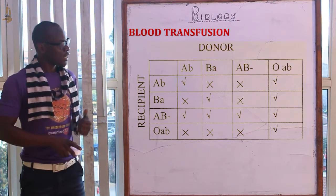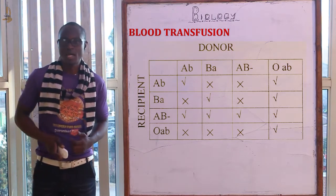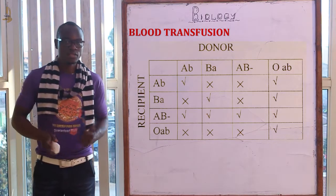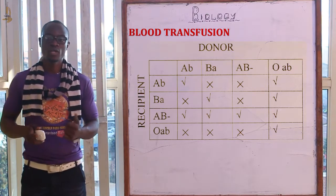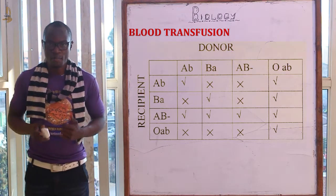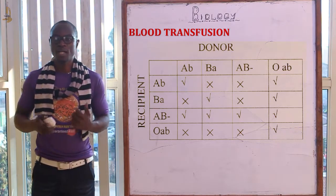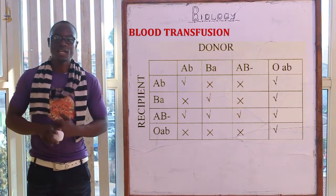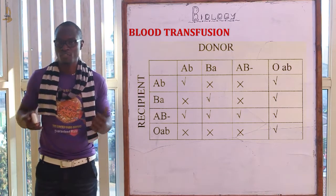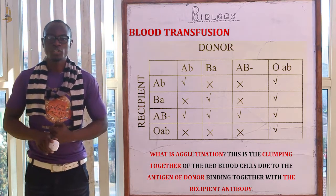As seen in the diagram of blood transfusion, blood group AB has neither small a nor small b antibodies. For this reason, it is referred to as the universal recipient, meaning it can receive blood from all other blood groups — blood group A, B, or O — since it does not have any antibodies. Antibodies can cause the clamping together of blood, which is referred to as agglutination.